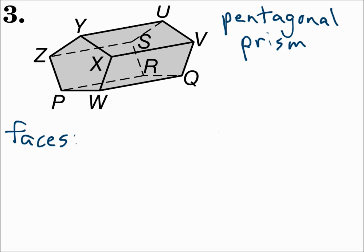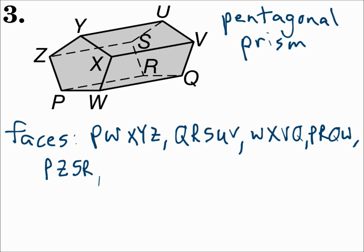The faces, you first have the two pentagon bases. One of them is PWXYZ, and the other one is QRSUV. Then you have the five rectangles. Rectangle WXVQ, PRQW, PZSR, ZYUS, and rectangle YUVX.